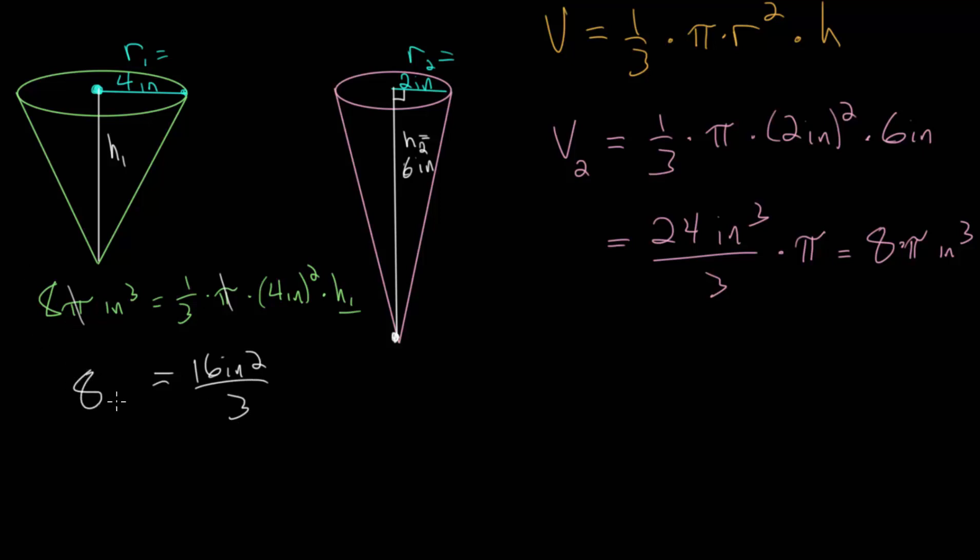On the left, we still have 8 cubic inches. On the right, this is multiplied by H1. Then what we can do is multiply each side by 3 to get rid of this fraction, which means we have 24 cubic inches is equal to 16 square inches times H1.